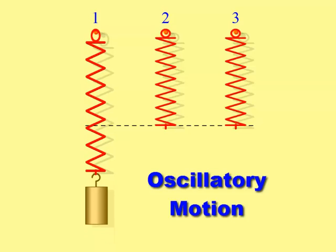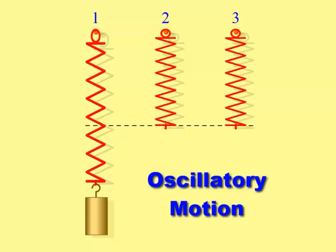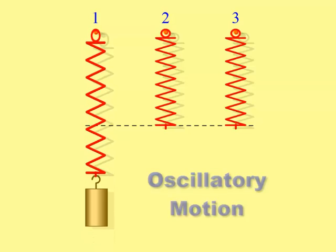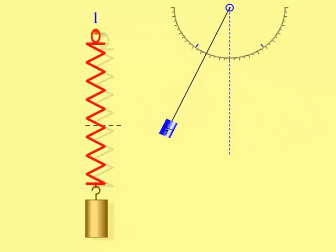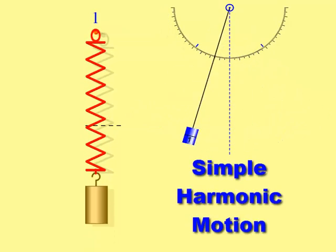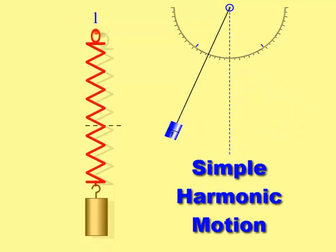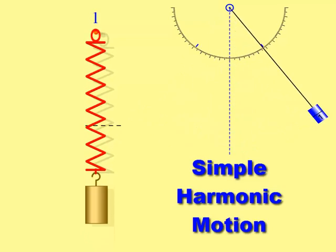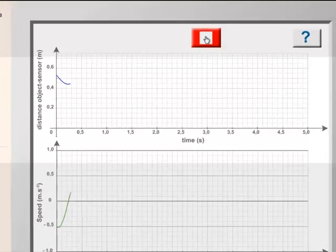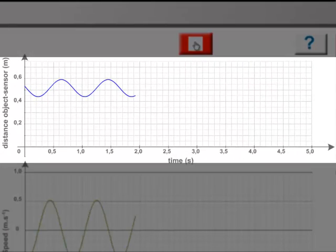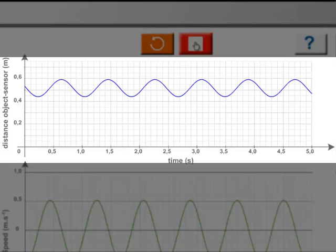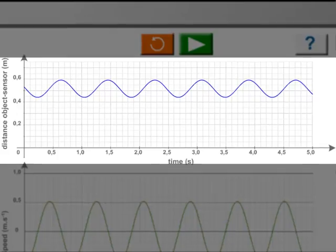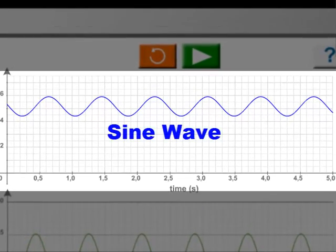The motion of a mass bouncing up and down on a spring is a form of oscillatory motion. The mass and spring system and a pendulum are both examples of what's known as simple harmonic motion. One thing that defines simple harmonic motion is that it can be represented by a sine wave where the y-axis is position and the x-axis is time. If you attach a pen to a mass and spring and move the paper underneath the pen at a constant speed, it draws a perfect sine wave.